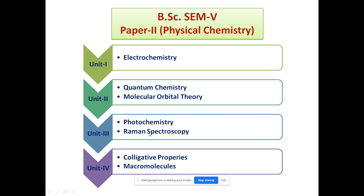Then photochemistry and Raman spectroscopy — Raman spectroscopy is a short introductory concept in the syllabus. Next is colligative properties, already covered in 12th standard — vapor pressure, normality, freezing point, boiling point elevation, etc. A new topic is macromolecules, also called polymers. These are all syllabus topics in BSc SEM5 Paper 2, physical chemistry.